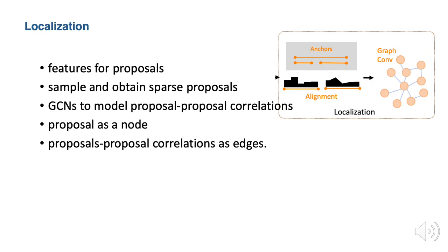After the backbone module, based on the SG-alignment layer from GTAN, we extract segments of the feature from the video representations as proposals. The proposals in the same video are usually highly correlated, and using these properties can facilitate proposal recognition. Instead of densely generating proposals, we sample and obtain sparse proposals, so grid operations such as 2D convolutions no longer apply. We use GCNs to model the proposal-proposal correlations. In our GCN-based network, we represent each proposal as a node and correlations as an edge, where edges are constructed based on temporal correlations formulated as IoU between two proposals.